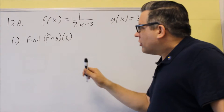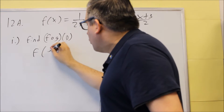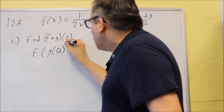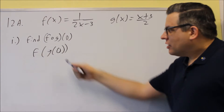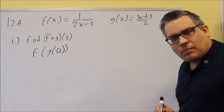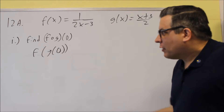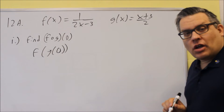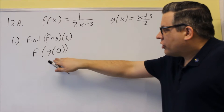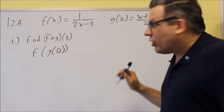So for part i, let's start with that one and write the definition. What this means is that you want to find g of 0 first. When we get the answer for that, then we'll put it back into f to get the answer. Notation-wise, this is the correct way of writing that.